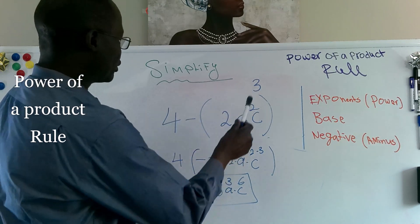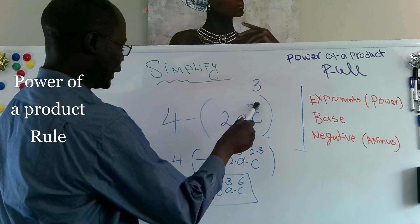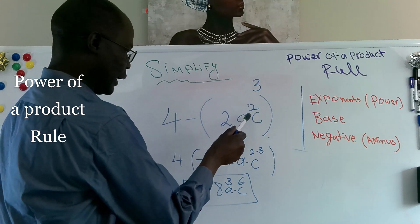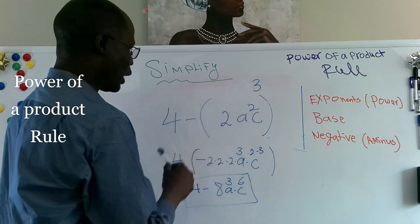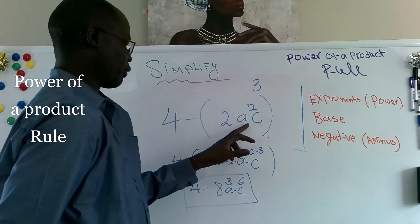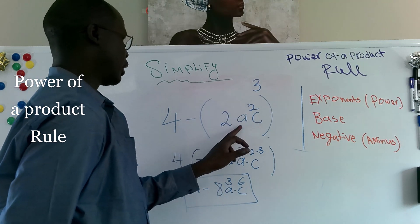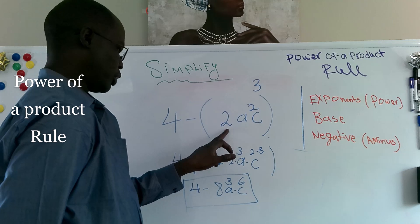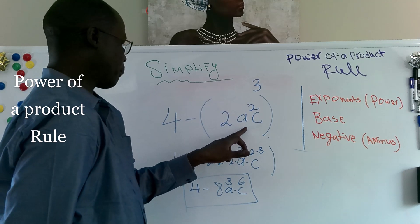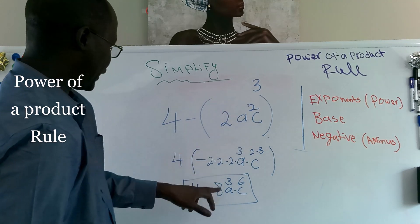Here, we multiply 3 to 2, we got 6. And a to the power of 1, it became to the third power of 3 power. And 2 to the third power of 3 power, it became 8.